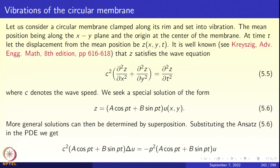Let us begin by looking at the vibrations of a circular membrane clamped along its rim, with radius 1 for simplicity, and the mean position measured along the xy-plane. When the membrane is in equilibrium there are no vibrations; the membrane lies in the xy-plane with the center at the origin and time as the third variable. When the membrane is set into vibrations, the displacement at point (x, y) at time t is z(x, y, t), which must satisfy the wave equation.